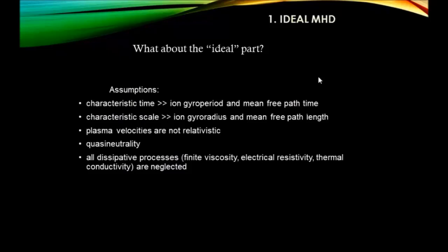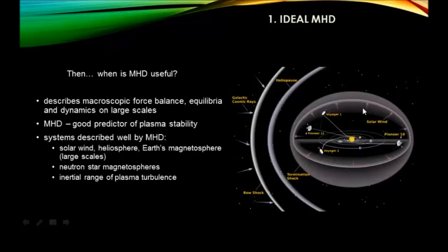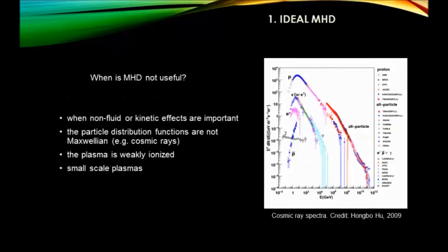With all these assumptions, you may wonder when ideal MHD is actually useful. It is really useful to describe macroscopic force balances, equilibria, and everything on large scales such as the heliosphere. It is a really good predictor of plasma stability and describes the solar wind, the heliosphere, Earth's magnetosphere, the magnetospheres of other stars, and inertial ranges of plasma turbulence.